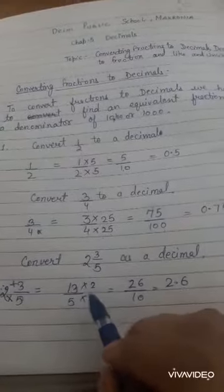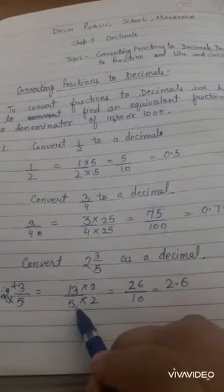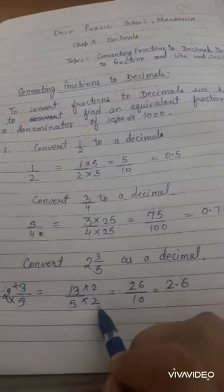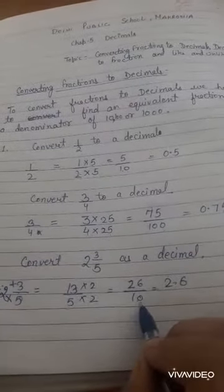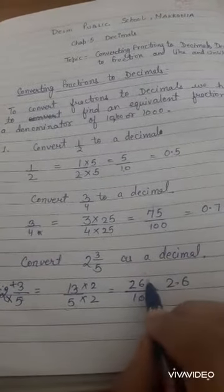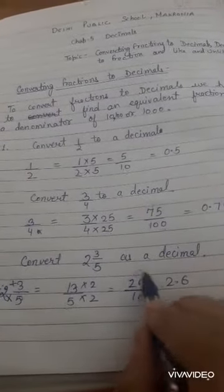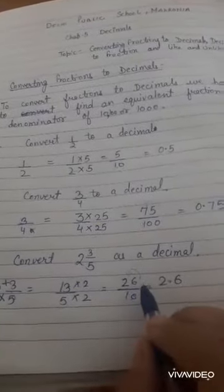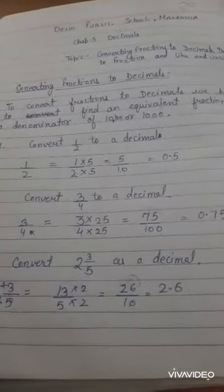When we multiply 5 by 2 we will get 10 as the denominator. Since there is one zero, the point will shift one place to the left.